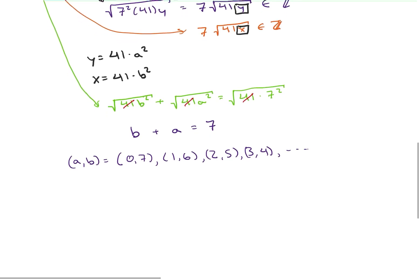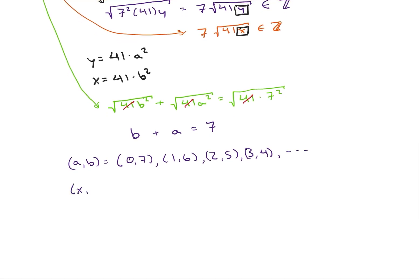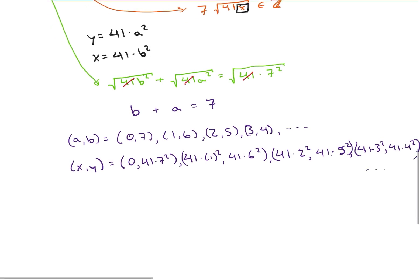So when we calculate (x,y), so x and y are then going to be 0 and then 41 times 7 squared, and then 41 times 1 squared, 41 times 6 squared, then 41 times 2 squared, 41 times 5 squared, and then 41 times 3 squared, 41 times 4 squared, and then obviously the mirror images of all those guys.